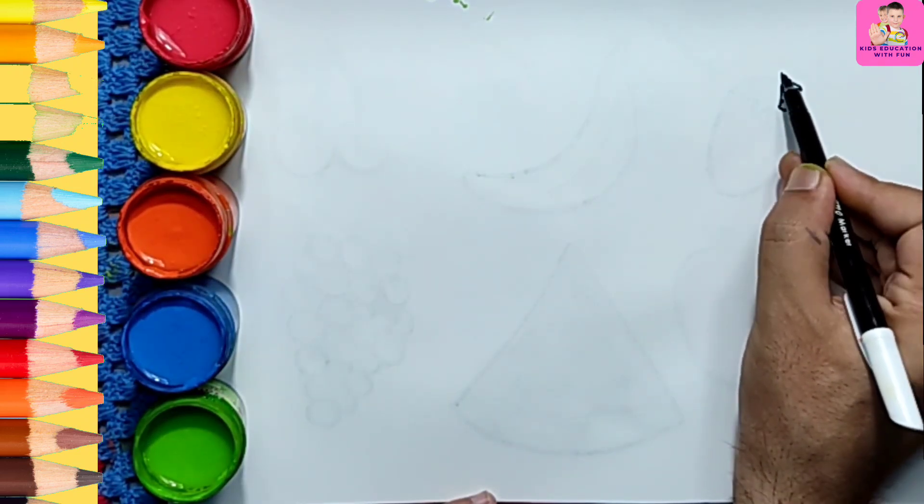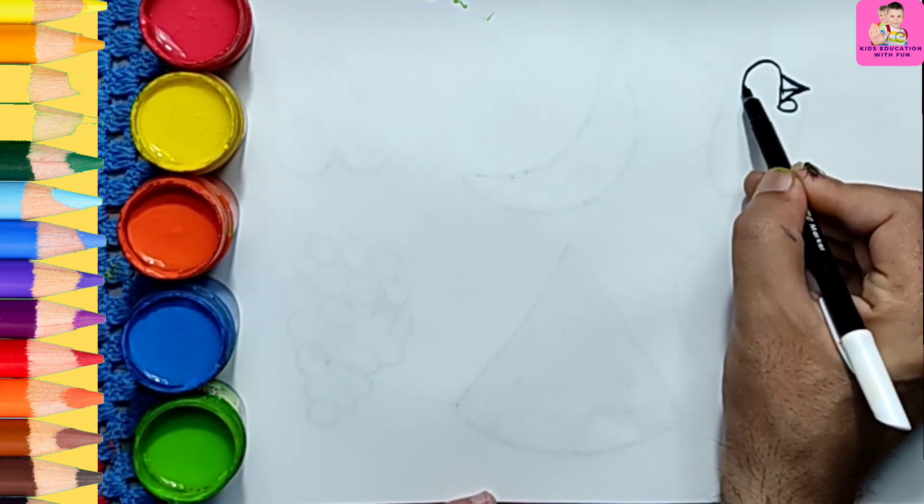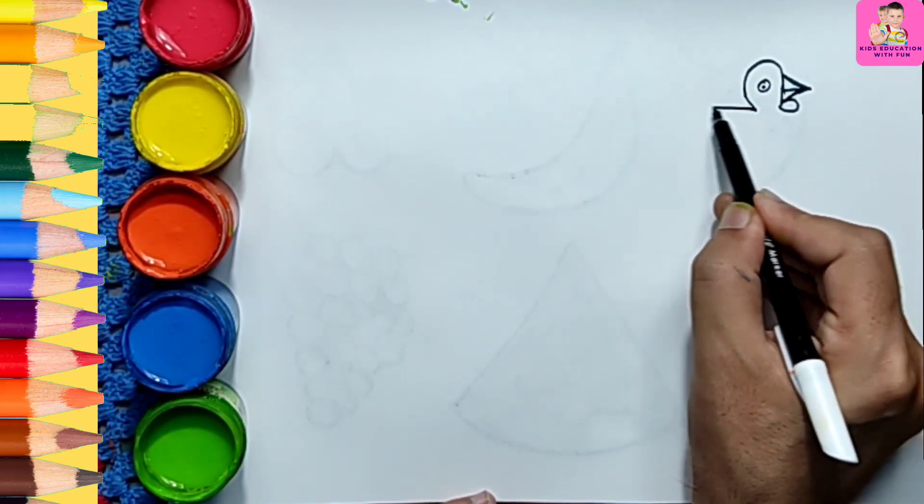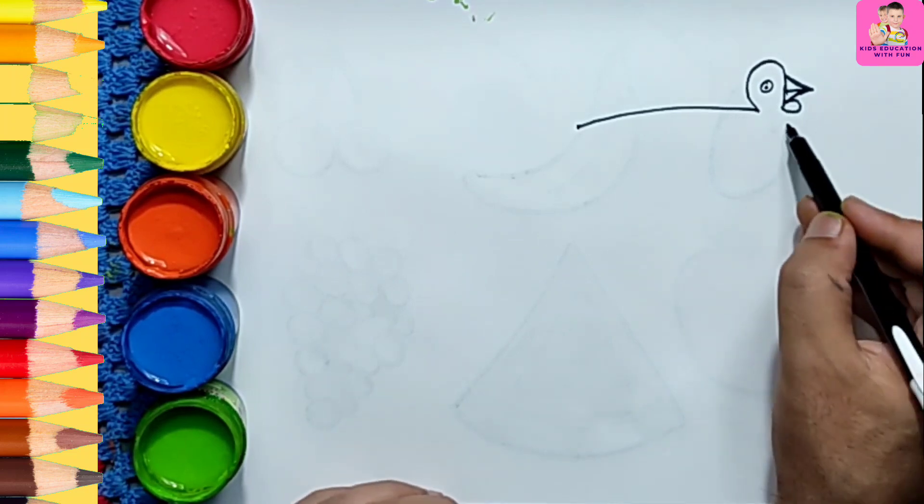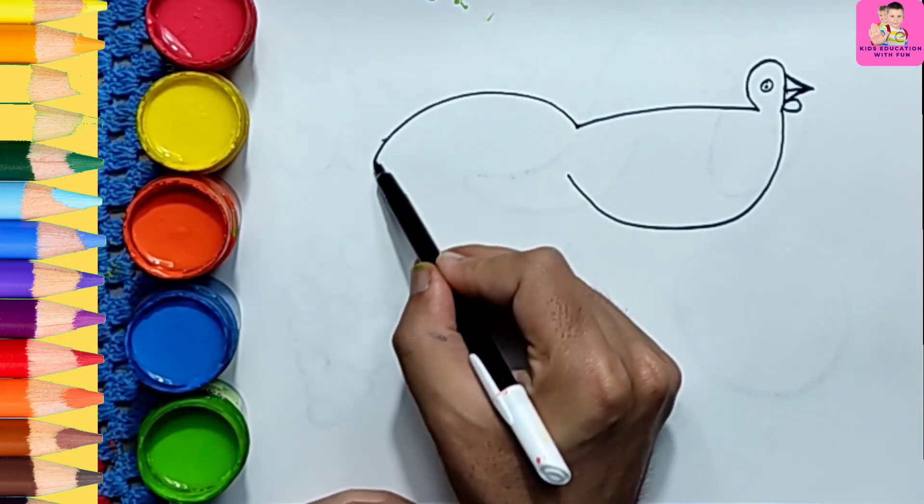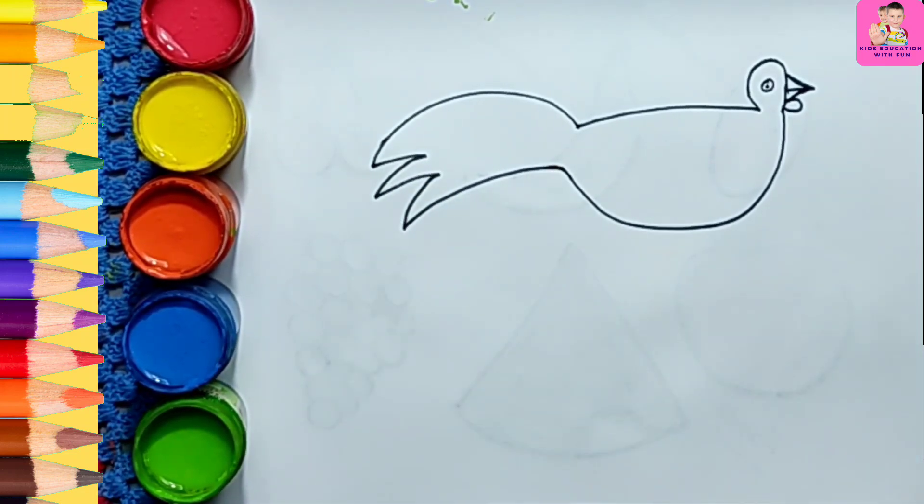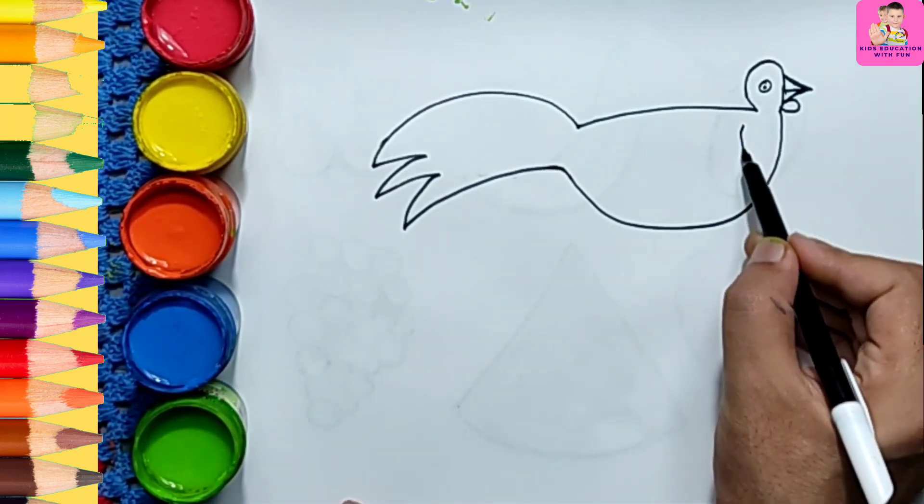Now another number is 5. So what are we going to draw with this? So this is 5, it's a cock.